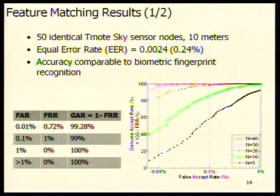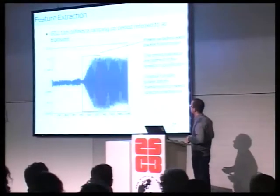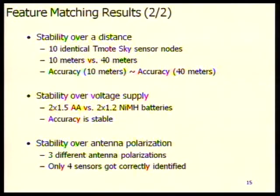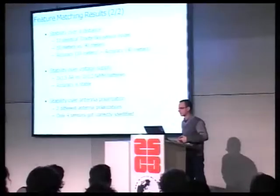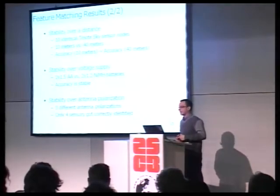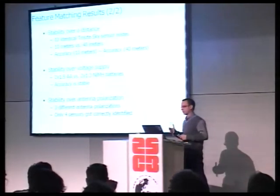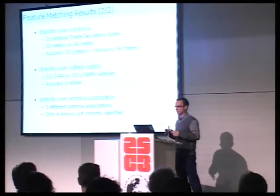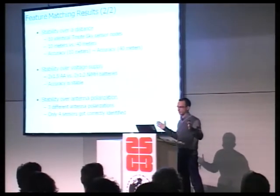Question: How much signal do you need? We varied from 5 to 40 packets. After about 30 packets, accuracy is almost the same, so roughly 30 packets is sufficient. Question: What about component aging over time? We haven't tested aging. I intend to redo the experiment after six months. During our work, tests were done within one week. Just as with human biometrics, these properties will likely change over time — like fingerprint or face recognition systems that need regular updates.